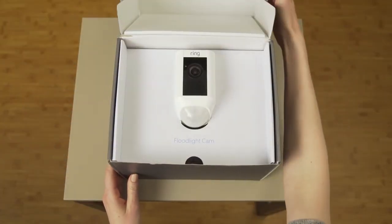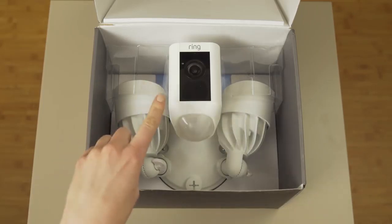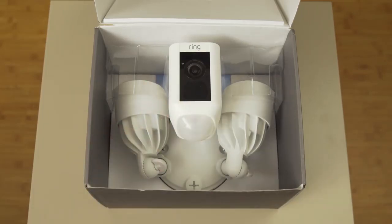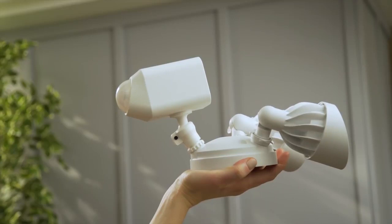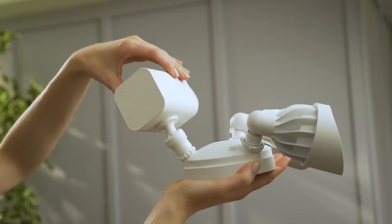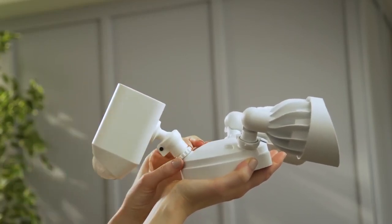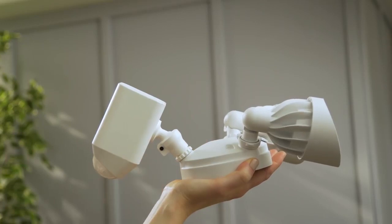This is how Floodlight Cam comes out of the box. You'll notice Floodlight Cam ships with the camera rotated upside down for protection. This is the camera lock collar. Loosen it so you can rotate the camera 180 degrees so that it's right side up, then tighten the camera lock collar to hold the camera in place.